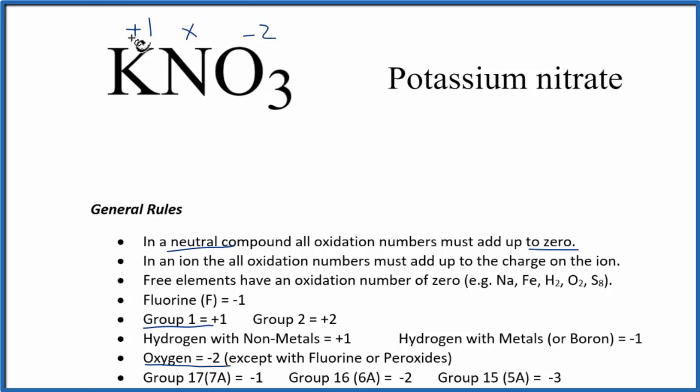And all of these numbers, they're going to add up to zero. So let's just set up an equation. We have plus one plus X plus, we have three oxygens. Each one's minus two. So three times minus two, that's a minus six.